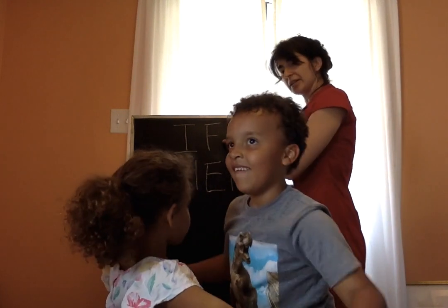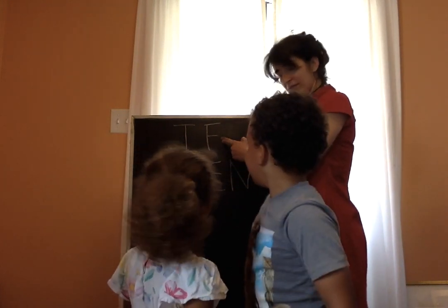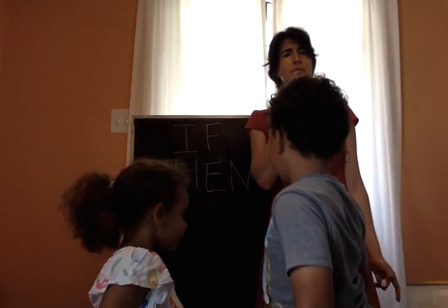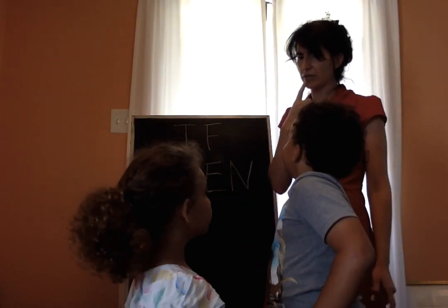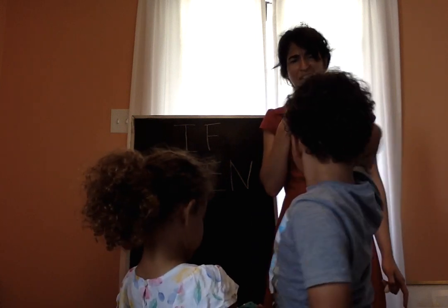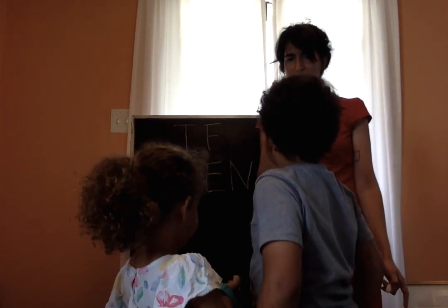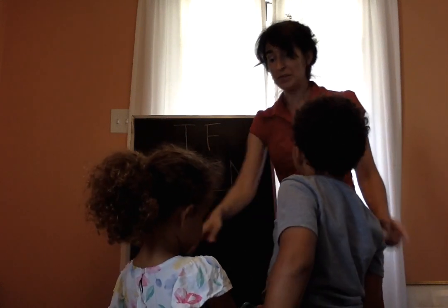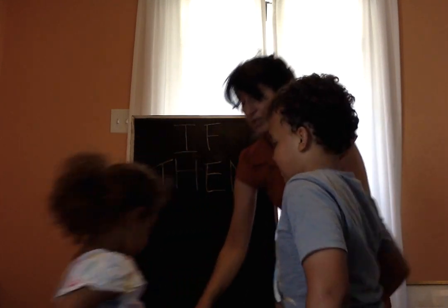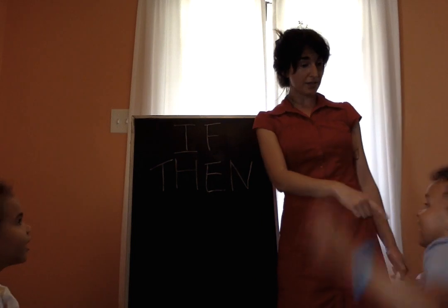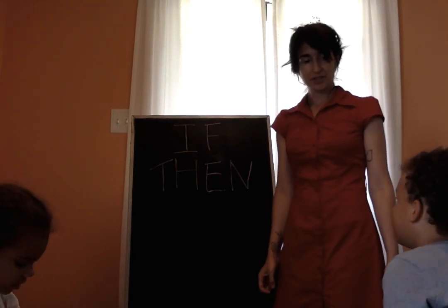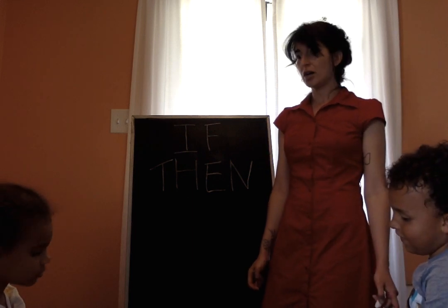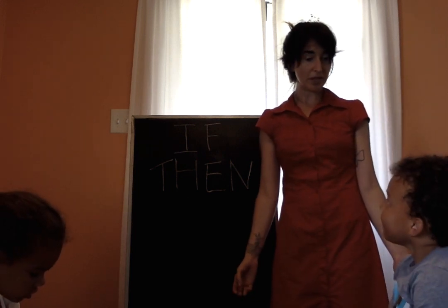So what were our words again? If. And then. So let's think of some situations where we might use our if/then. If I were to cross the street without looking, then what might happen? Can you sit in your chairs while we do our thinking? A car might bump into you and run over you. Yes, a car might bump into me and roll into me.